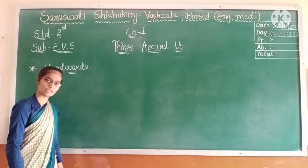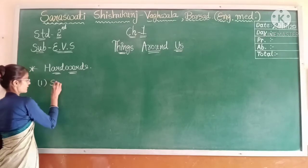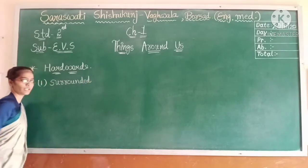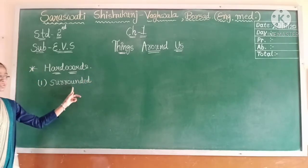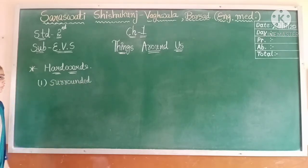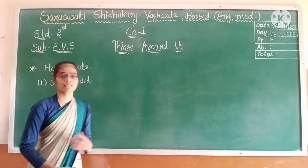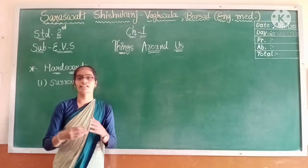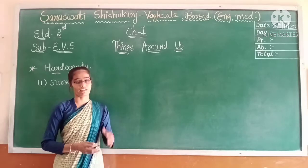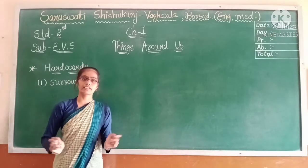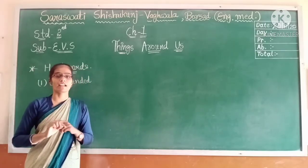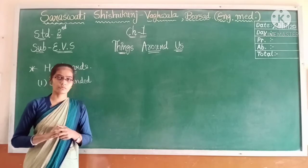We will learn the vocabulary first. First word: S-U-R-R-O-U-N-D-E-D — surrounded. I hope all of you are aware of this spelling that we learned in the first semester — 'surrounding.' Surrounding is the area around us, and 'surrounded' means we all are surrounded by many things. That is called surrounding.